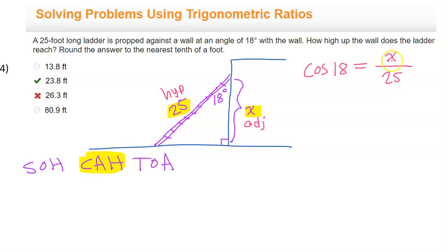When the variable is in the top like this, you're going to solve by multiplying both sides by the denominator. So I'm going to multiply both sides by 25. That way these will cancel out, and that leaves X by itself.